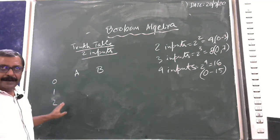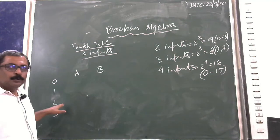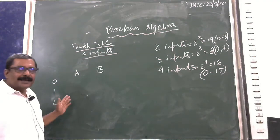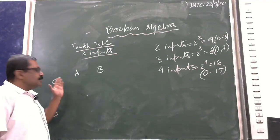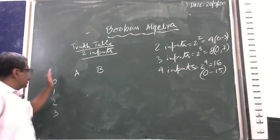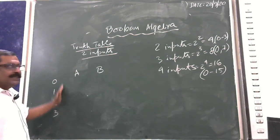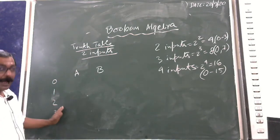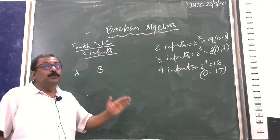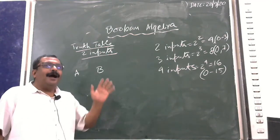This numerical approach may not always be required, but once you understand it you can do it independently. This is called the logical approach — how to form or draw a truth table.